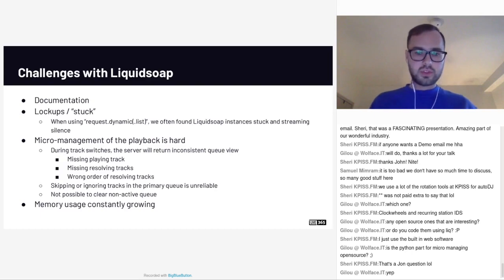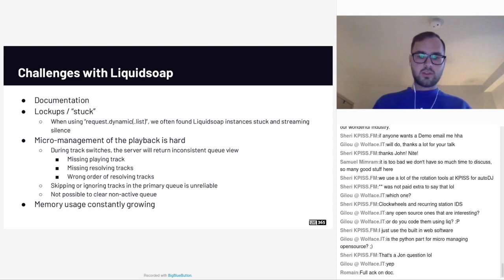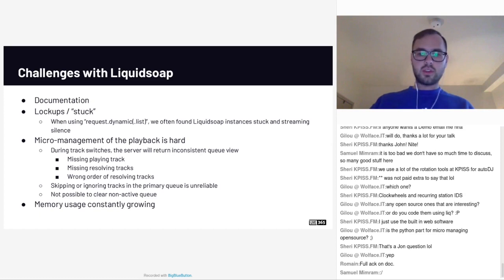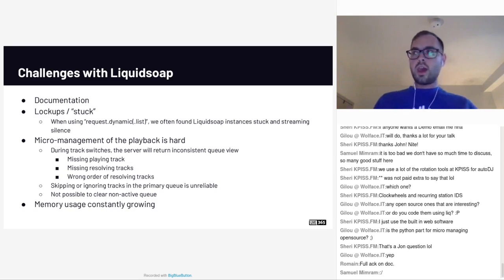Some challenges we have with Liquid Soap. Documentation was one thing we found as a challenge. While there is a lot of documentation readily available, for most of the non-trivial cases we found that you either have to be very familiar with Liquid Soap or find some examples to implement something similar — a lot of it was definitely trial and error. We also found that sometimes in our older infrastructure, lockups and stuck Liquid Soap instances would happen. We don't really have this problem anymore after switching to only queues, but it definitely was an issue that as we started to scale, we started noticing Liquid Soap instances locking up consistently.